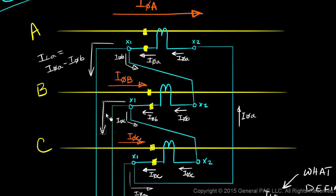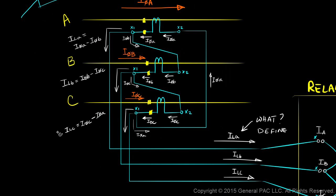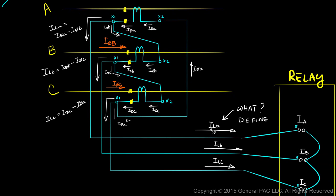Similarly, ILB — the line current for Phase B — equals what's going into the X1 terminal (I-phase-B) minus what's leaving (I-phase-C). And ILC equals I-phase-C minus I-phase-A. So in summary: ILA = I-phase-A − I-phase-B; ILB = I-phase-B − I-phase-C; ILC = I-phase-C − I-phase-A.